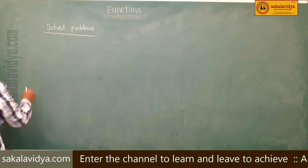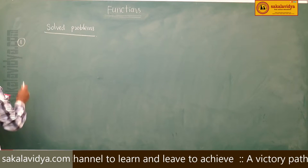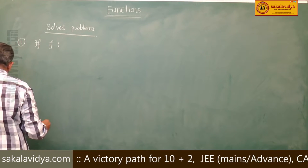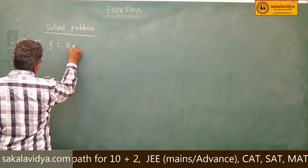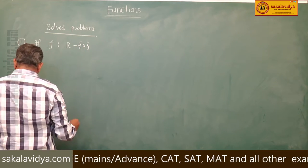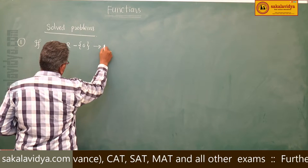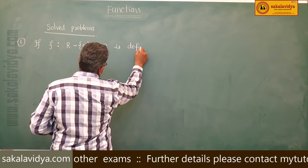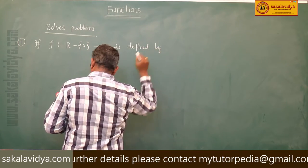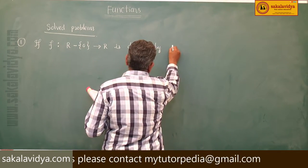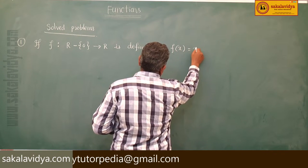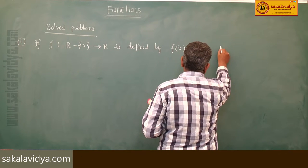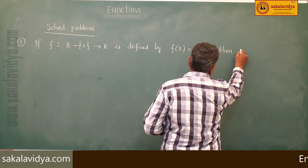Solved problems. First problem: If f: R − {0} → R is defined by f(x) = x + 1/x, then prove that f(x)² = f(x²) + f(1).